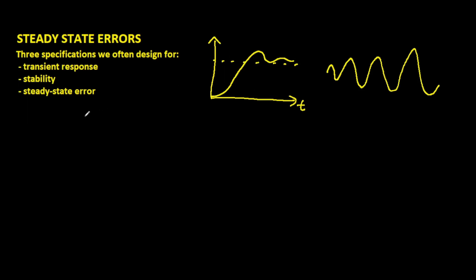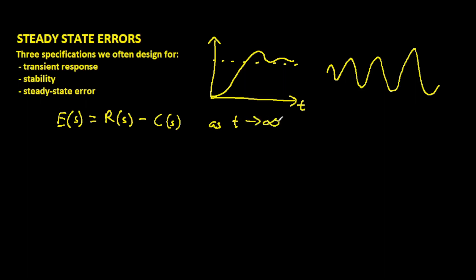The steady-state error, by definition — I'll call that E, written in the frequency domain as E of S — is defined as your input, that's your reference signal, minus your output signal. So whatever your output signal is, subtract it from your input signal, and you get your steady-state error. This is obviously as time heads towards infinity, so we specify this as time heads towards infinity to give us the steady-state error.